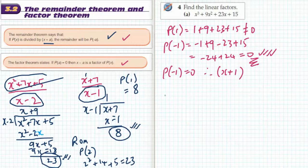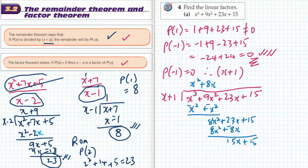So I'm going to divide x plus 1 into this cubic: x cubed plus 9x squared plus 23x plus 15. Okay, so I found this part. The last bit: x goes into 15x, 15 times.